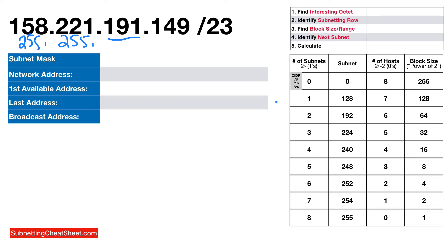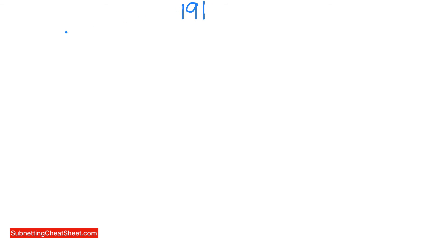Now we need to find the subnetting row. The CIDR is 23, so starting at 16: 16, 17, 18, 19, 20, 21, 22, 23 — that's our subnetting row. The block size is 2. Now for the range, we have to count in blocks of 2 and find the range that includes 191. That would take a long while counting from 0, so let me show you a trick to get this faster.